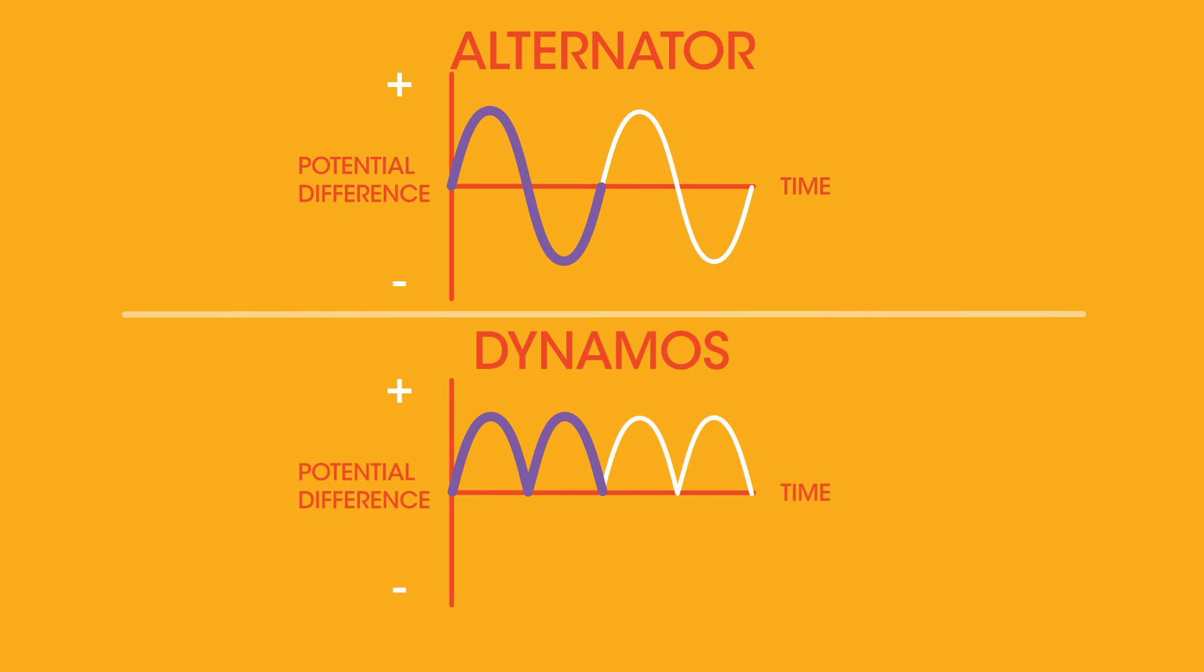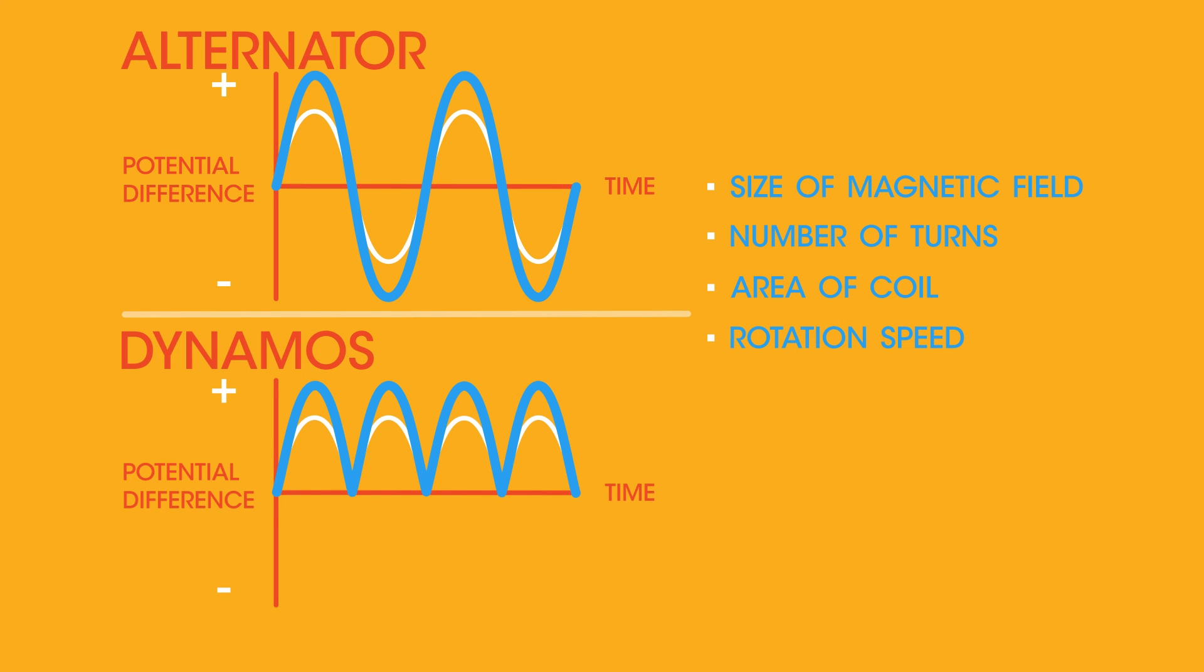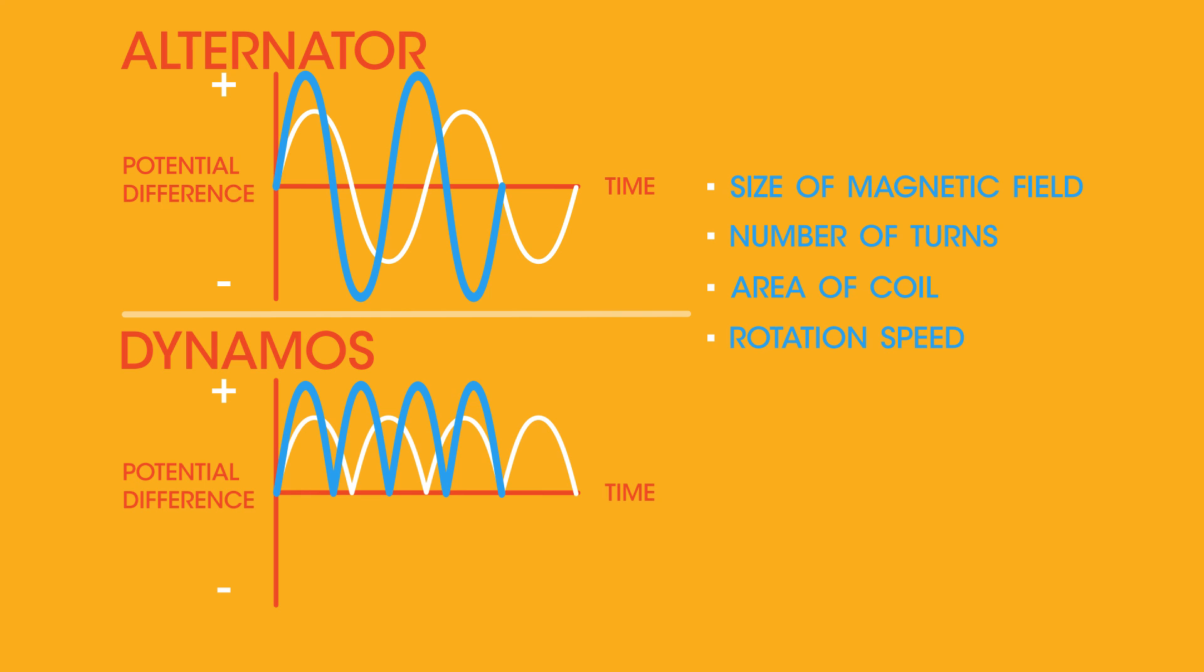Let's finish by quickly looking at how these graphs can change. If we increase the size of the magnetic field, then the size of the current increases. This also happens if we increase the number of turns on the coil or the area of the coil. And if we increase the rotation speed of the coil, then we increase both the size and the frequency of the current.